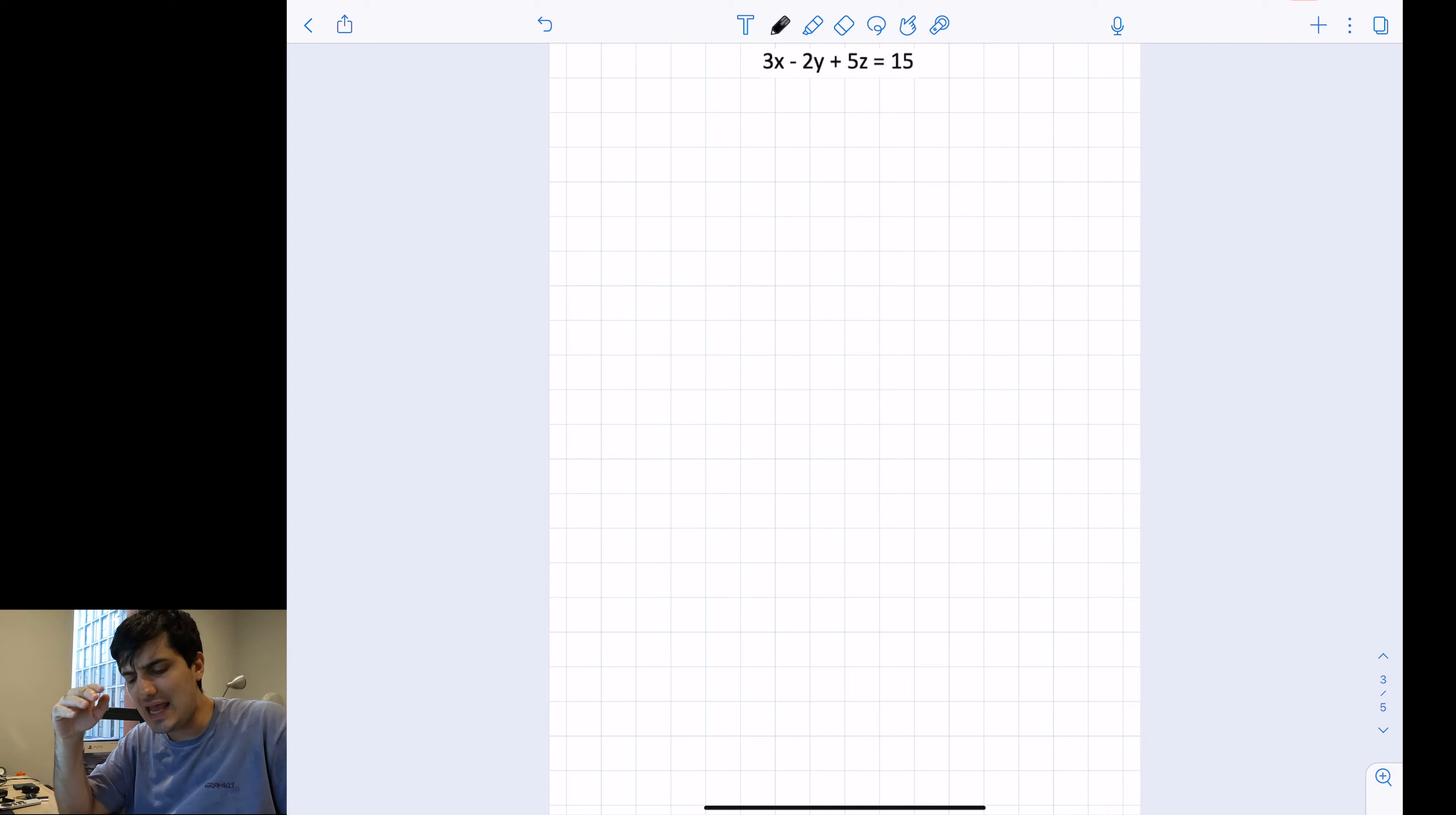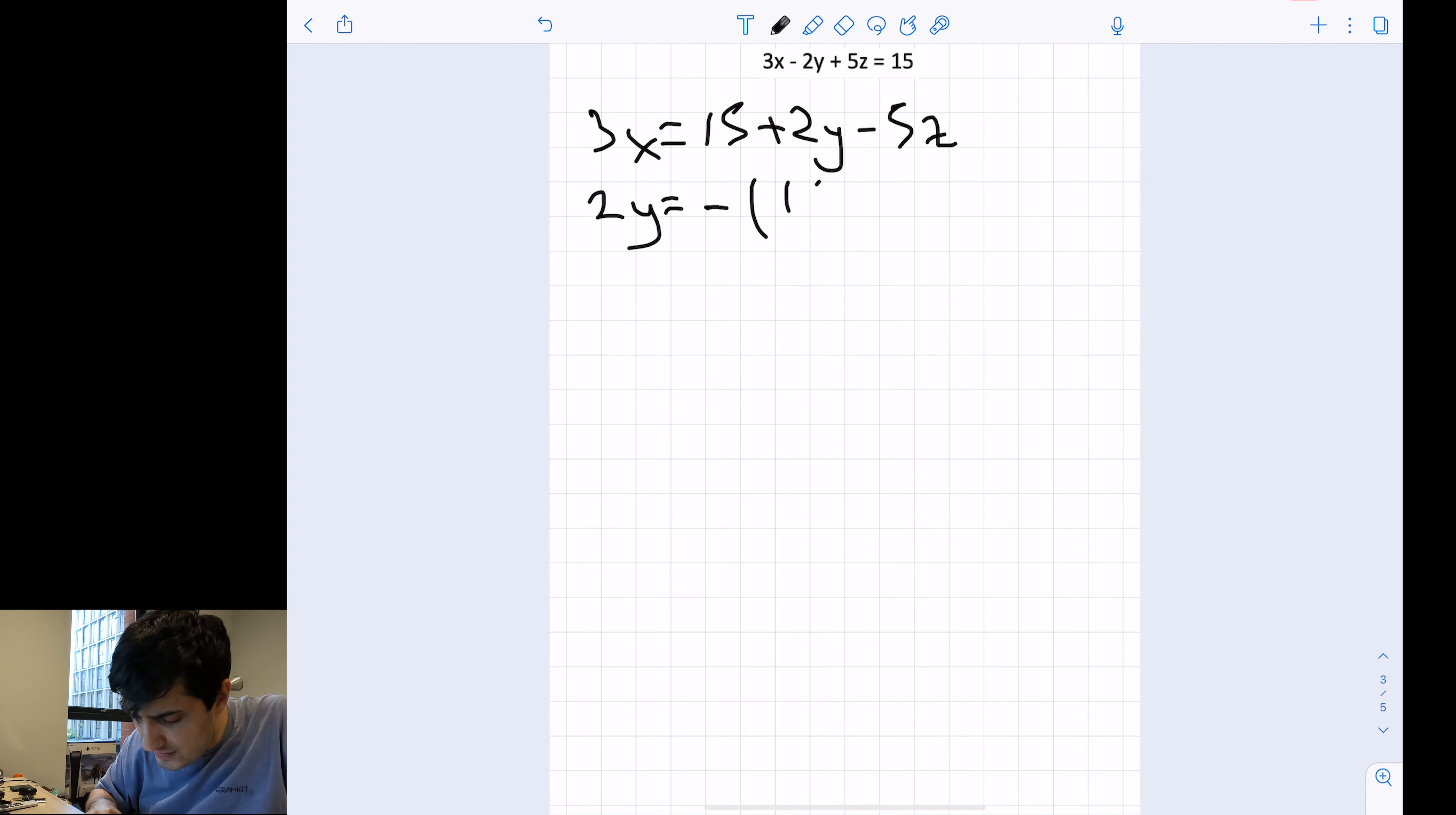Let's go to the next one. We have 3x minus 2y plus 5z equals 15. Now in this case, rather than doing it in two different ways, you can keep it in three different ways for x, y, and z. So you can say 3x will equal 15 plus 2y minus 5z.